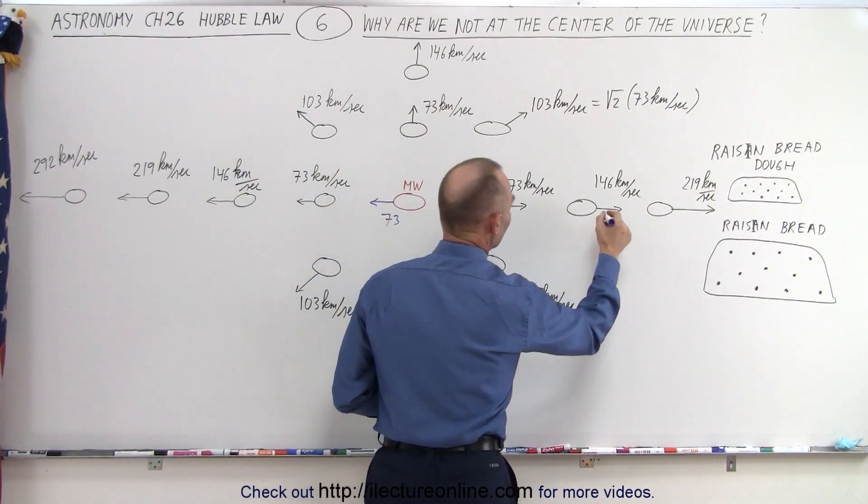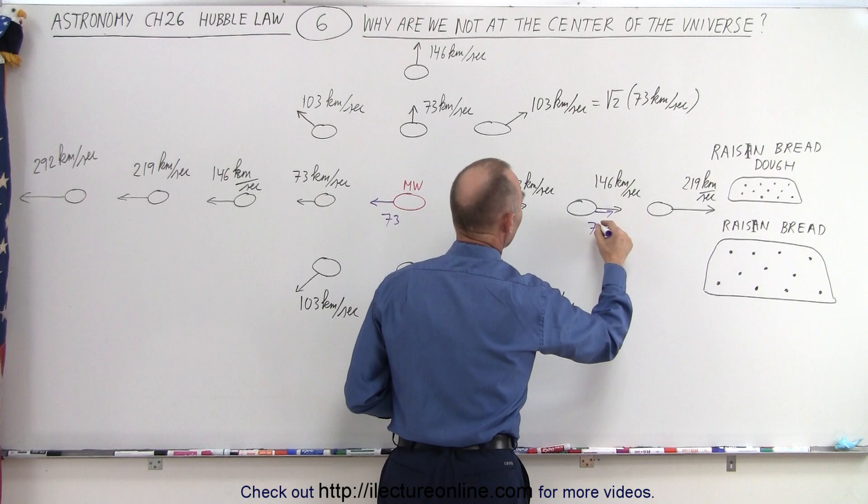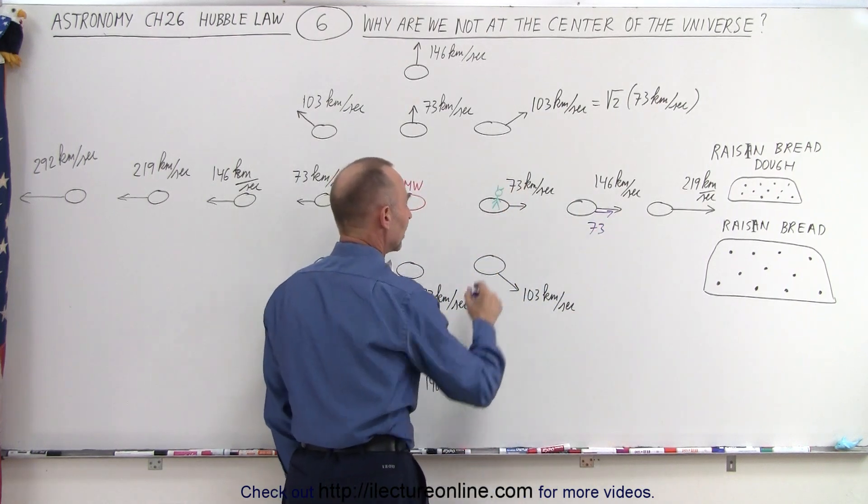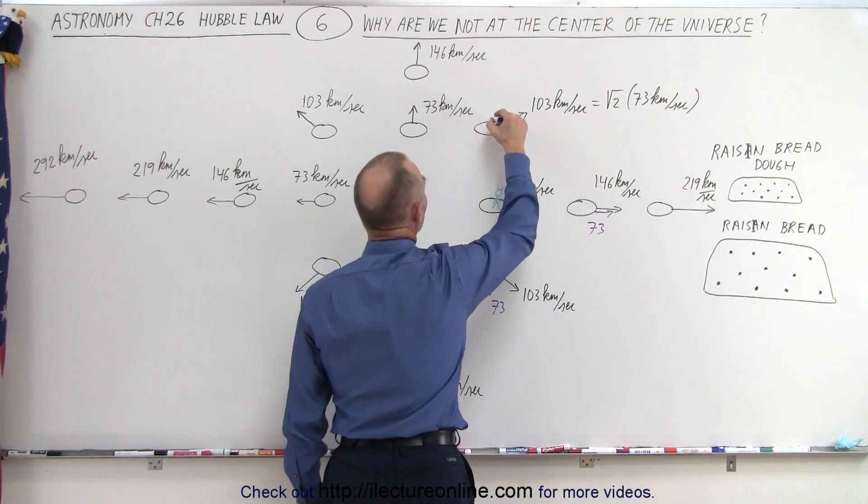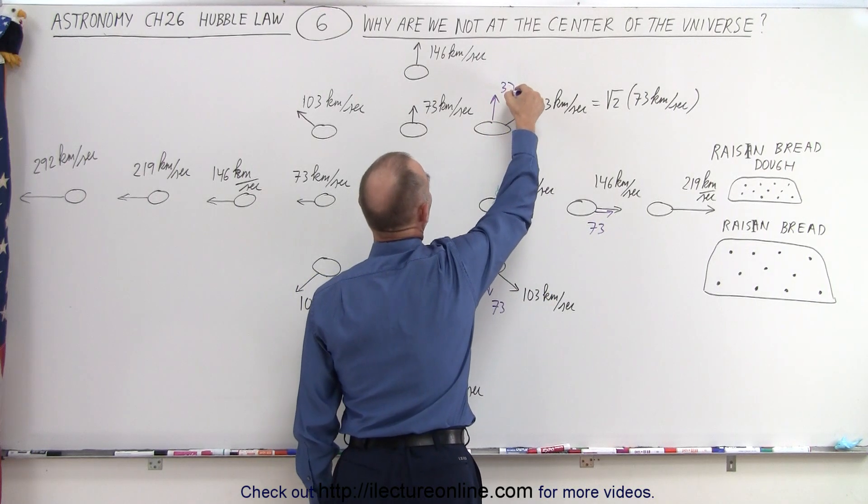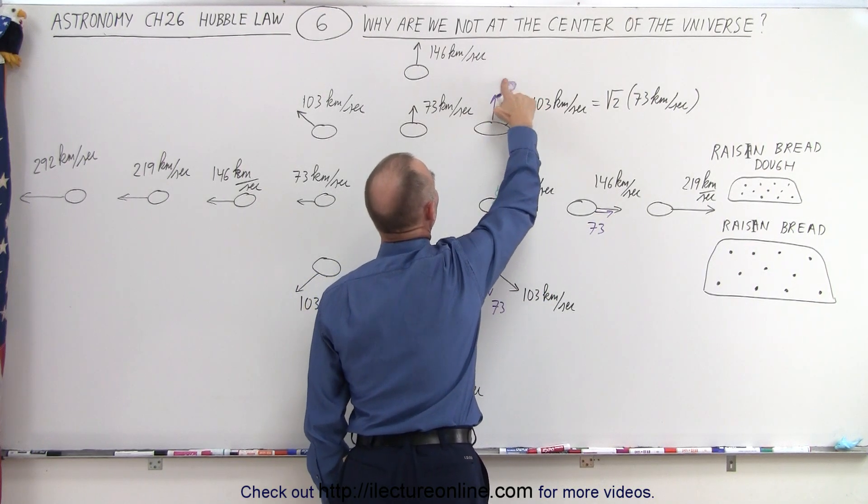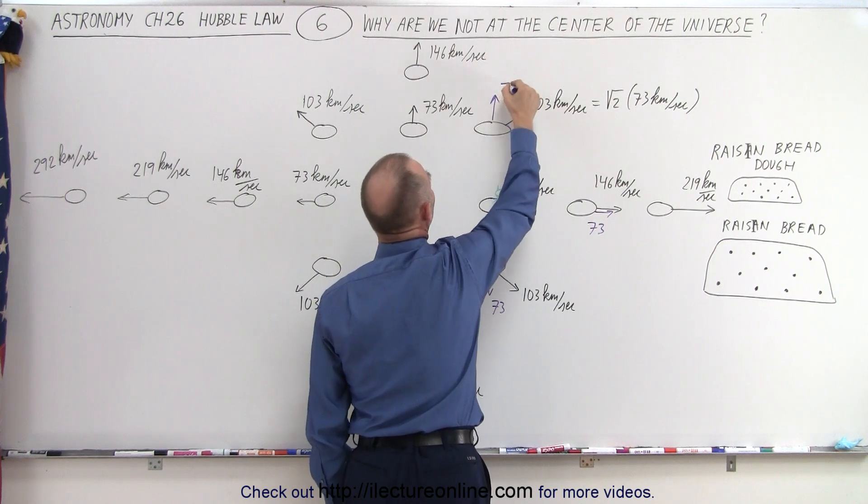And they look over in this direction and this galaxy would be moving at 73 kilometers per second. They look at this galaxy, this one would be moving at 73 and this one here would be moving at 73. Not 37, but 73. That's a little messy there, 73.